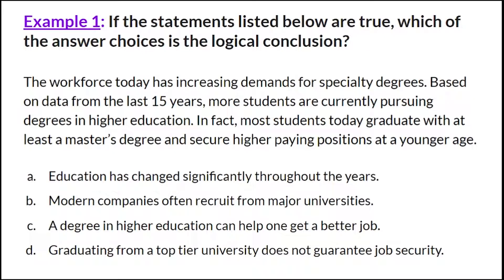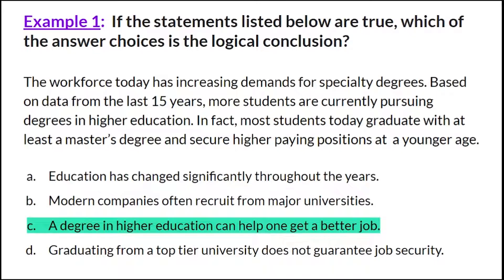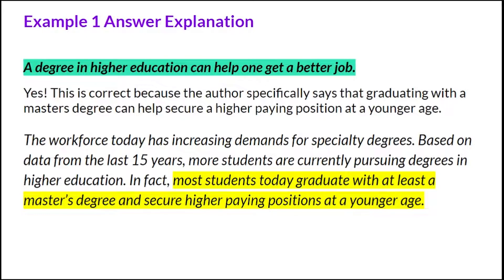Here's our first example — one way you could see a question about inferences and conclusions, independent of an entire passage. Read the passage, then read the short statements and decide which is the most logical conclusion. C is the best answer: 'A degree in higher education can help one get a better job.' This is correct because the author specifically says that graduating with a master's degree can help secure a higher-paying position at a younger age. I've highlighted that portion from the text in yellow on your screen.